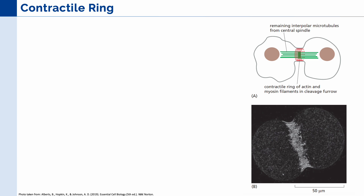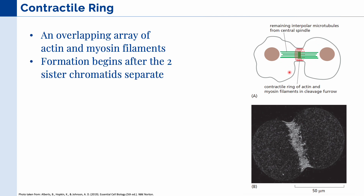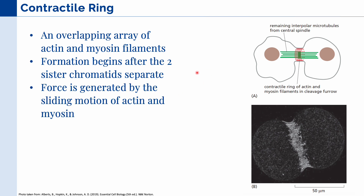Lastly, we will be talking about the contractile ring, which is the actual structure that causes the cell to divide. It is an overlapping array of actin and myosin filaments. Its formation begins shortly after the two sister chromatids separate, and the force generated by the contractile ring is caused by the sliding motion of the actin and myosin filaments.